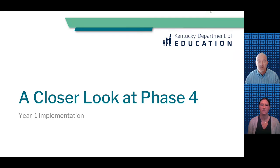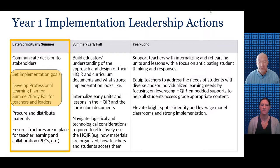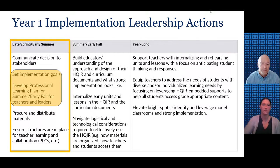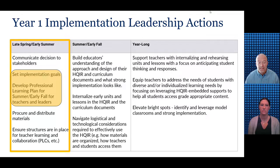We want to spend some time taking a closer look at key leadership actions that support the first year of implementation. These year one actions are taken from the Rivet framework shared earlier and spread across the year on the timeline. It is critically important to set clear implementation goals and to develop an aligned high-quality professional learning plan to support effective implementation and continuous improvement. You can see high-quality professional learning as a linchpin for the actions in the summer and year-long categories.